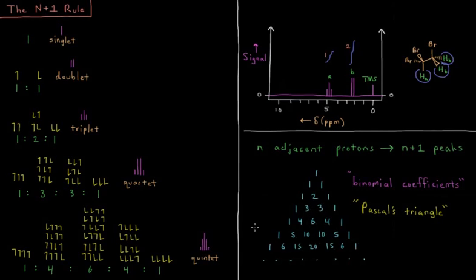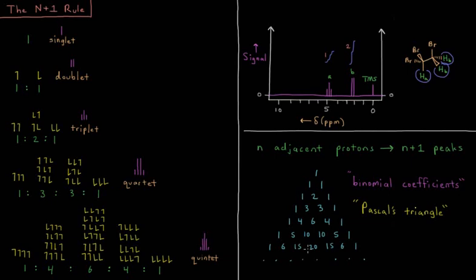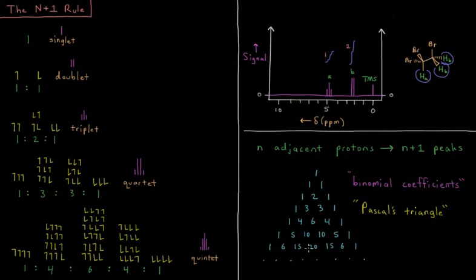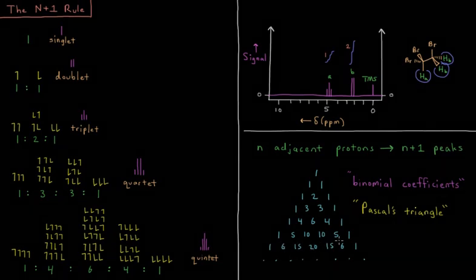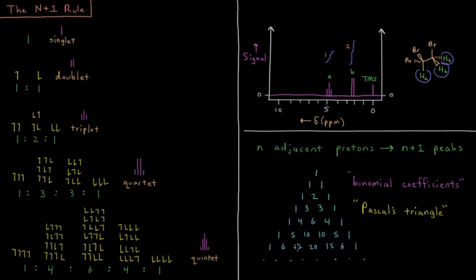So if we wanted to know what something with six adjacent protons looked like, if we wanted to know what a septet looked like, we would have this row here, 1:6:15:20:15:6:1. Starts to get very complicated, but the further you go down this triangle, the more and more things start to look like a Gaussian function. And in fact, the Gaussian function is the limit if you do Pascal's triangle with an infinite number of rows.